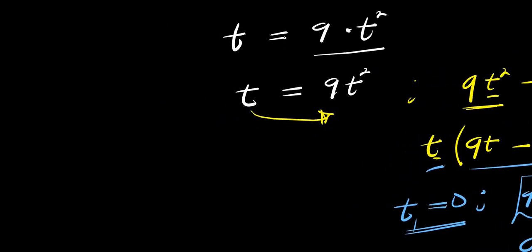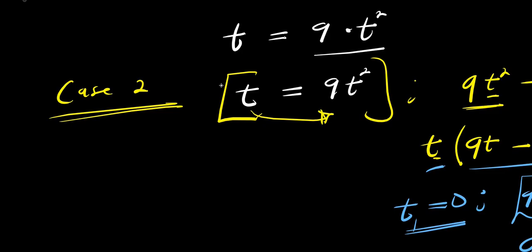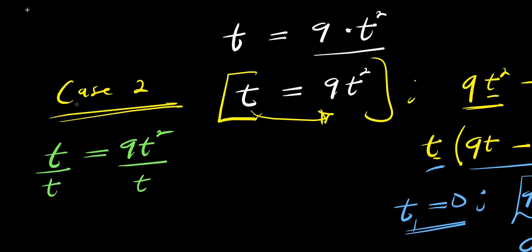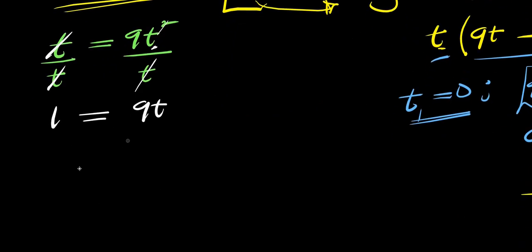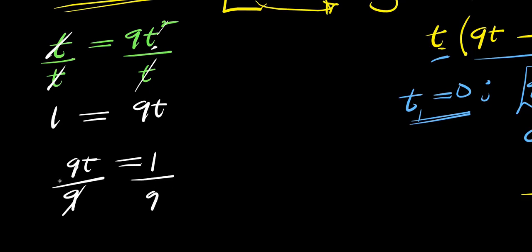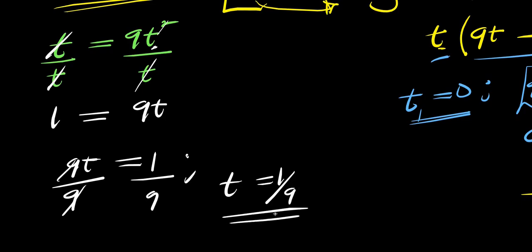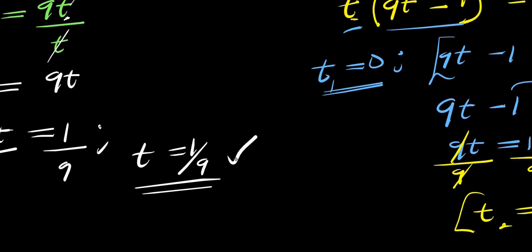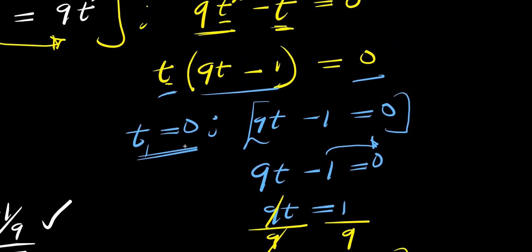Now, there is another way someone might solve this from t equals 9t squared. Another person might divide each part of this equation by t. What happens is that t eliminates t on the left giving 1, and on the right 9t squared divided by t gives 9t. So you have 1 equals 9t, meaning 9t equals 1, and dividing by 9 gives t equals 1 over 9. In this second approach, there is only one solution, which is 1 over 9. But in the first approach, we had two different solutions: 0 and 1 over 9.